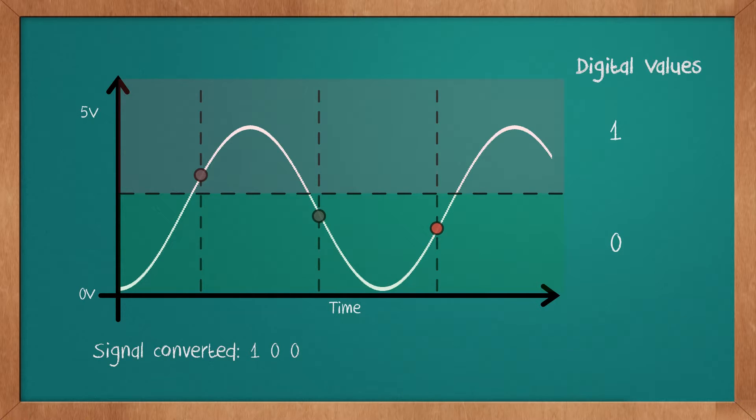We have just converted an analog signal to a digital one, with a 1-bit accuracy. This process is called quantization.